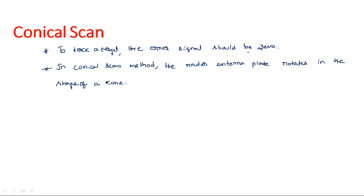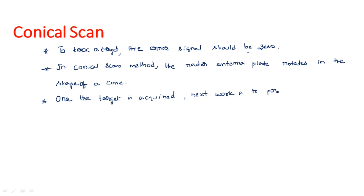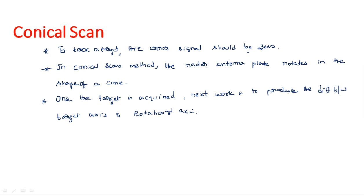Once the target is identified, our purpose is to make the difference between the rotational axis and the target axis equal to zero. This difference is known as the error signal. Once this error signal is identified, our aim is to make the rotational axis and the target axis inclined together.